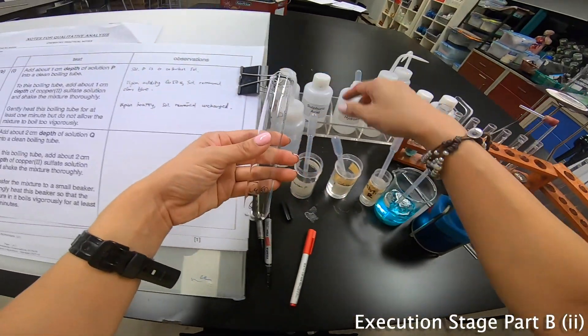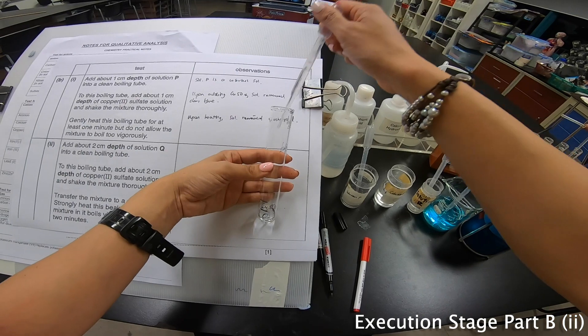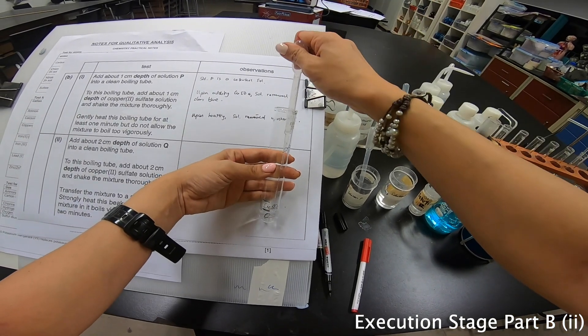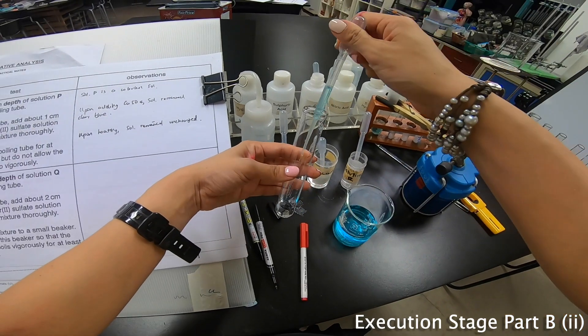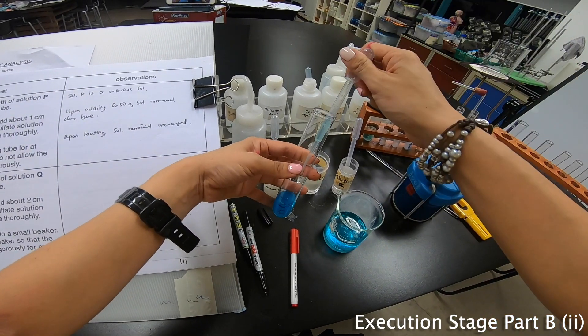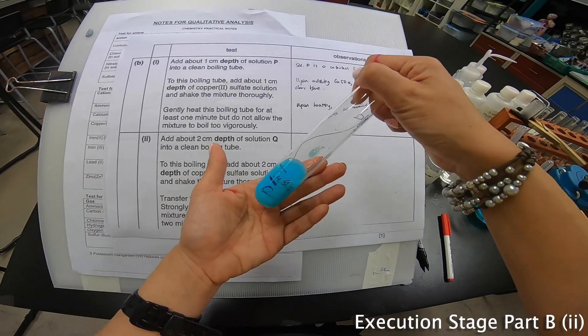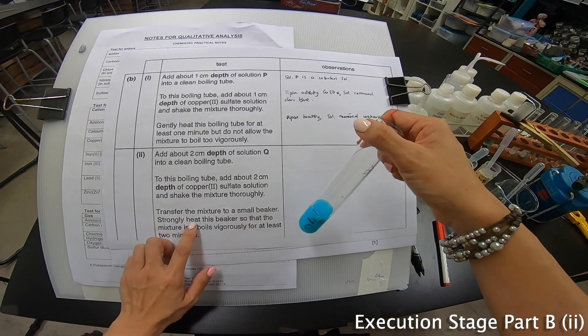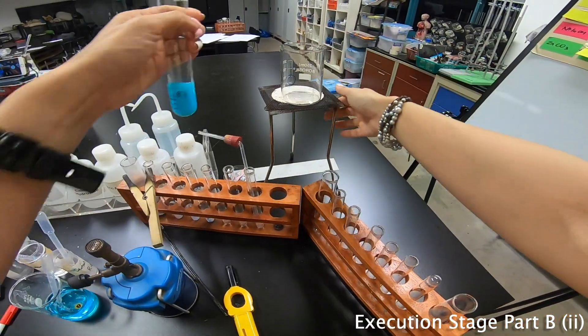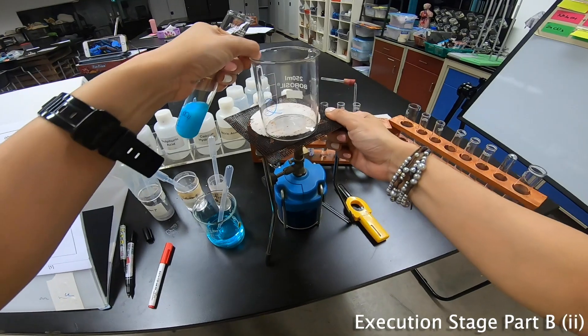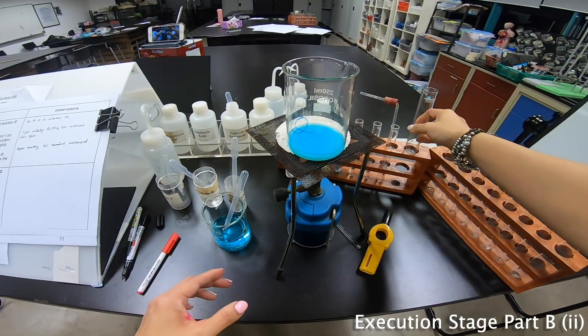Now this portion here is Q. So I'm going to add Q. Followed by my copper sulfate. Wow, very nice color for me. It's a blue precipitate. Now they say shake the mixture thoroughly, transfer this mixture to a small beaker, and strongly heat this beaker so that the mixture in it boils vigorously. So I have the beaker over here. I'm going to transfer it right over in front here.